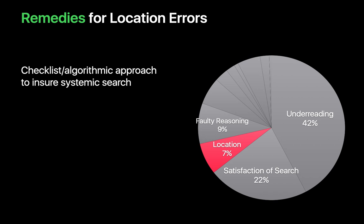A standard approach to visual search patterns that purposely incorporates regions you may be more likely to overlook is one remedy to minimize location errors. Make it a point to look at the upper and lower extremes of CT scout images, because anatomy in those locations may not always be included in the CT volume. Also remind yourself to check the abdominal organs on expiratory phase chest CT images, because a part of the upper abdomen can get imaged on the expiratory phase that isn't included in the normal inspiratory phase acquisition when the diaphragm is lower.